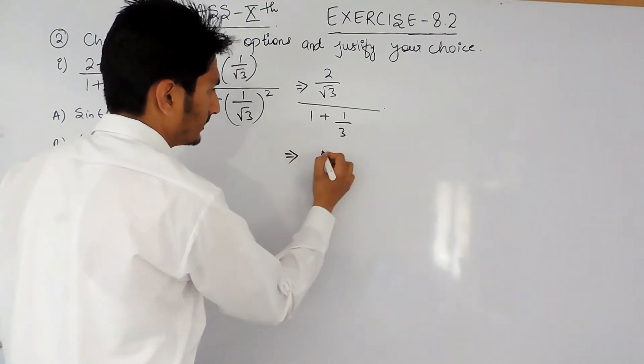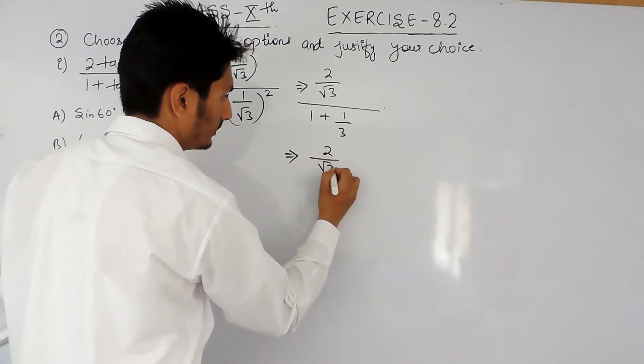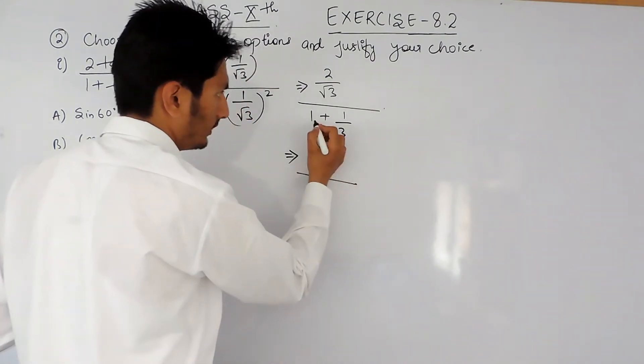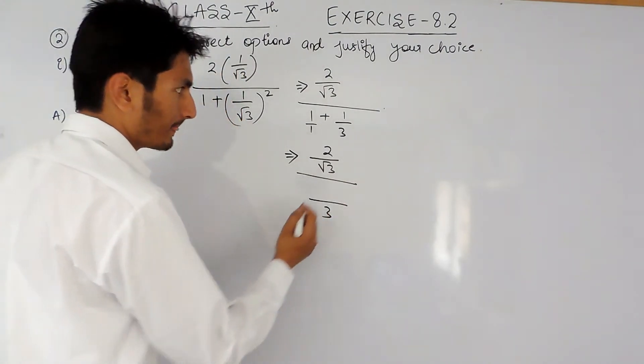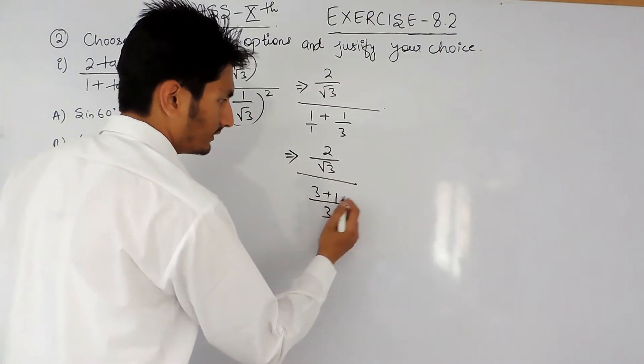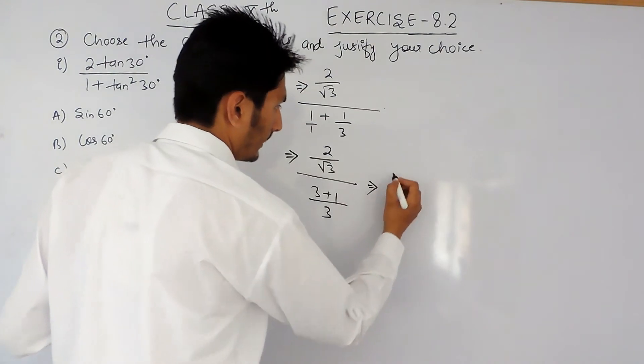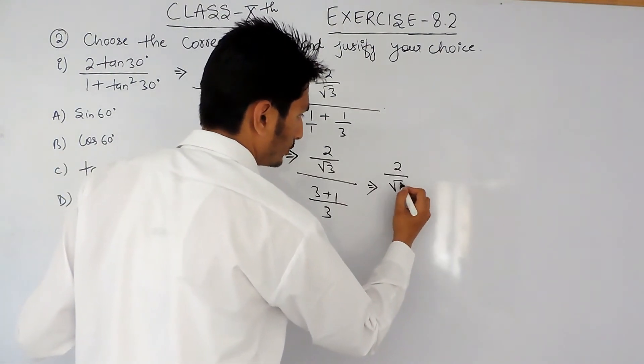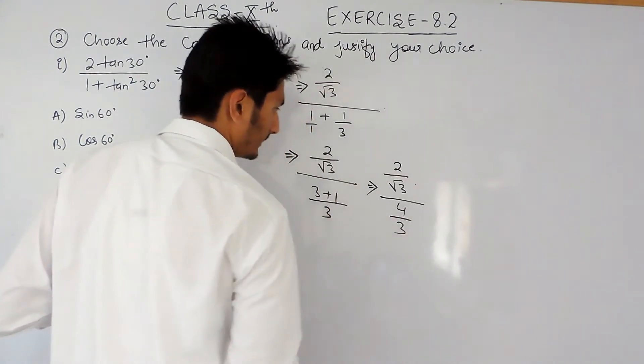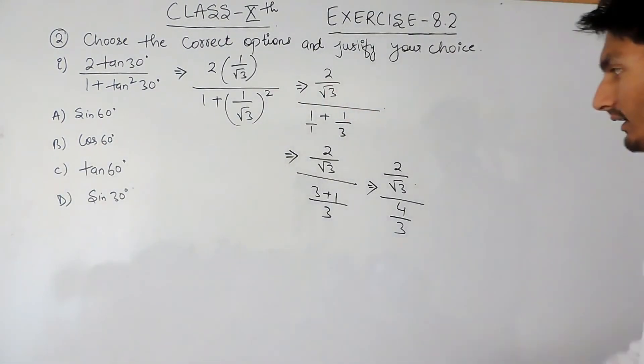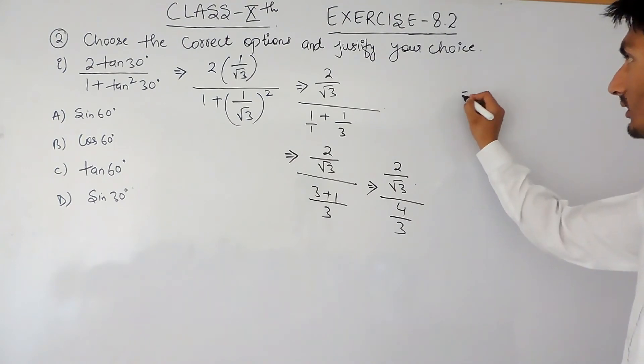Now solve this further. It will be (2/√3) divided by... To solve this expression, first of all it will be (2/√3) divided by (4/3).